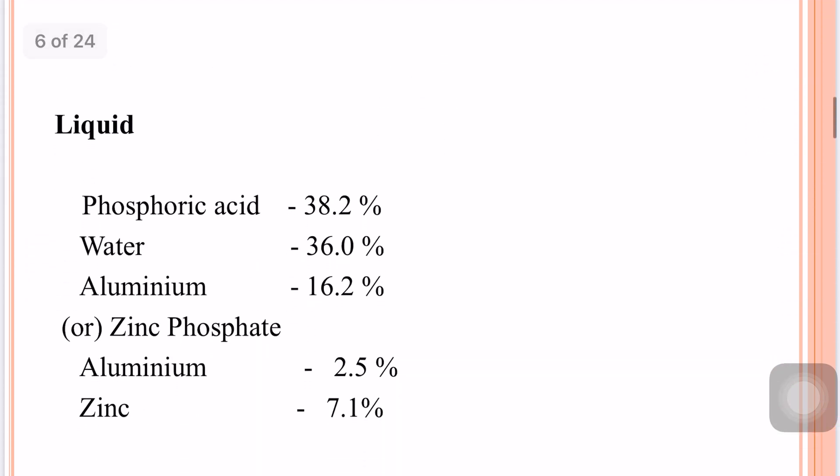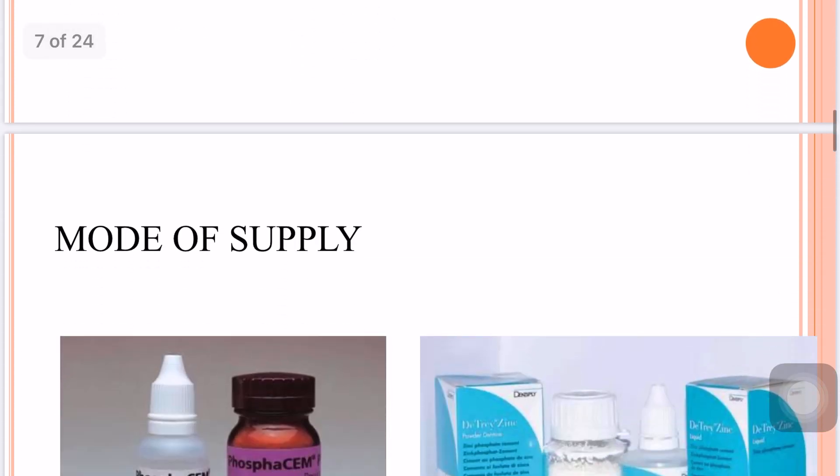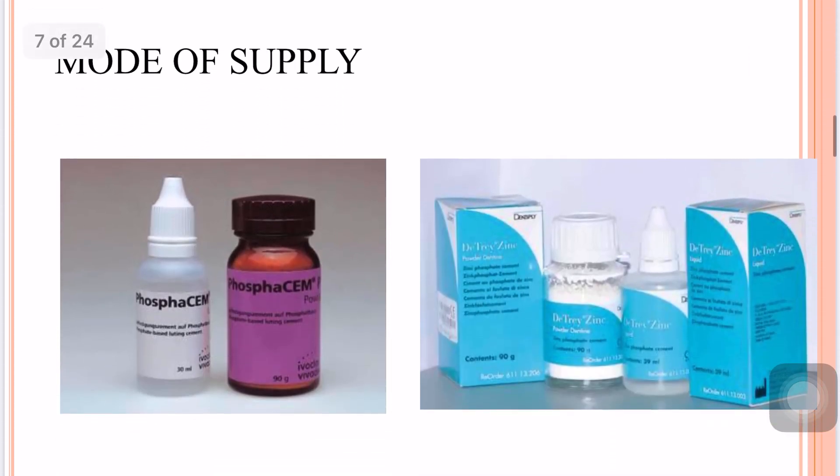The liquid mainly consists of phosphoric acid at about 38.2%, which is the main acid, water at about 36%, aluminium and zinc phosphate at about 16.2%, aluminium at 2.5%, and zinc at 7.1%.